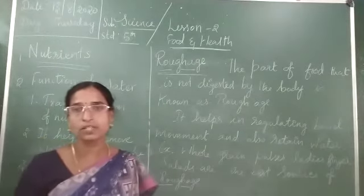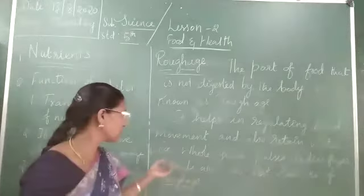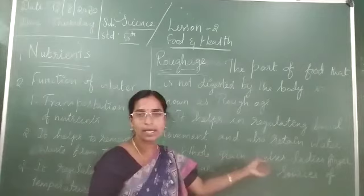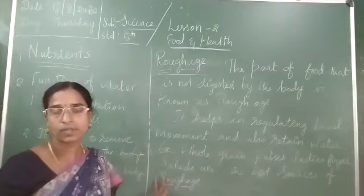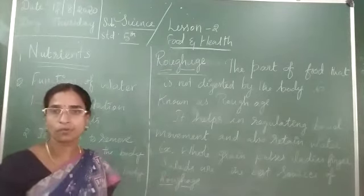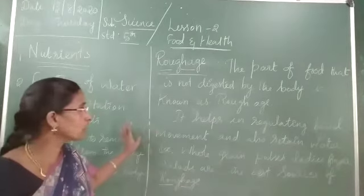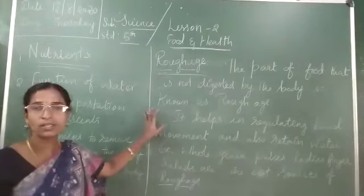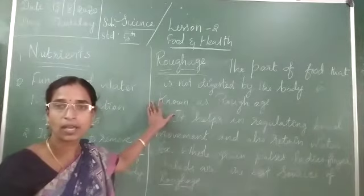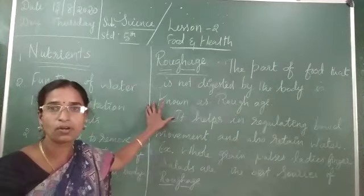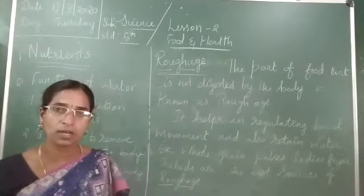Roughage is found especially in vegetables and fruits. Examples include whole grains, ladies finger, and salads — these are the best sources of roughage. Fruits like mango are also sources of roughage. Roughage means fiber, and fiber is very essential to help digest food easily.